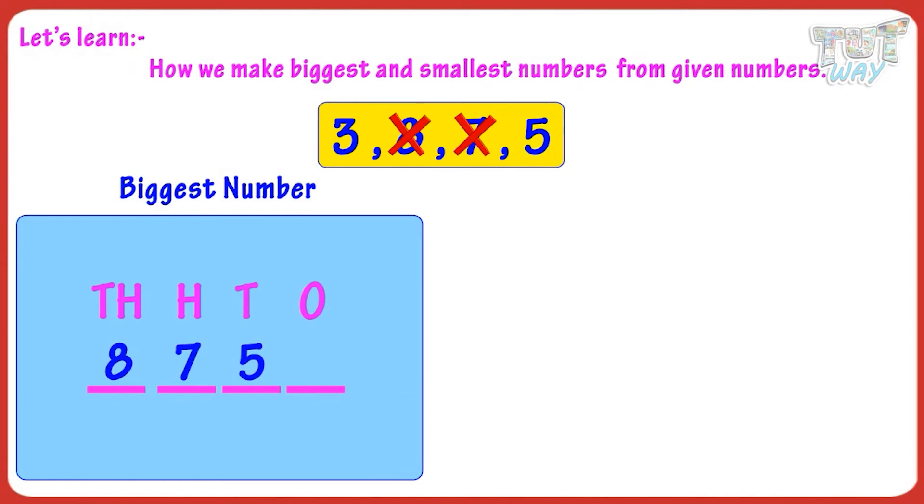Now, place the last number at the ones. So, place 3 at the ones place. So we have made the biggest number using the numbers given to us. So, 8,753 is the biggest number that you can make using the given digits without repeating any digit.